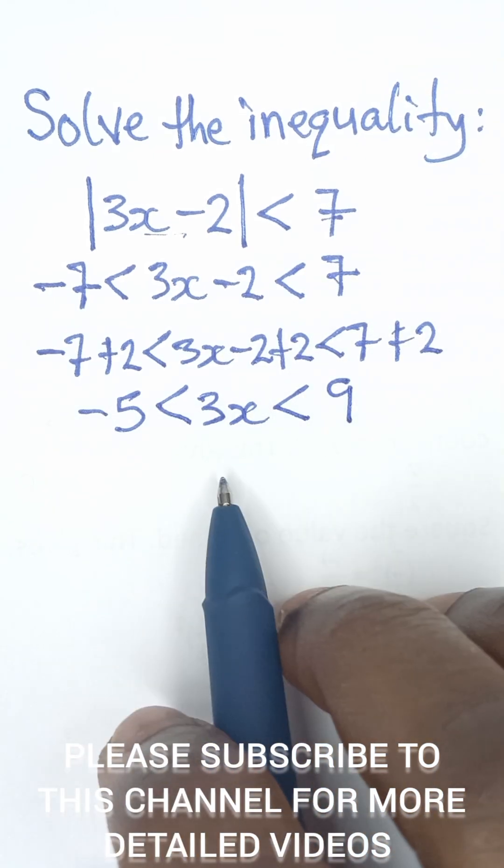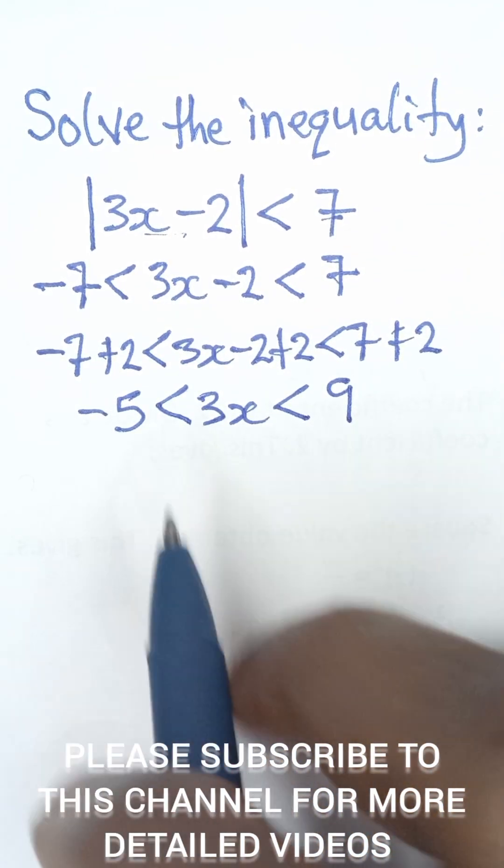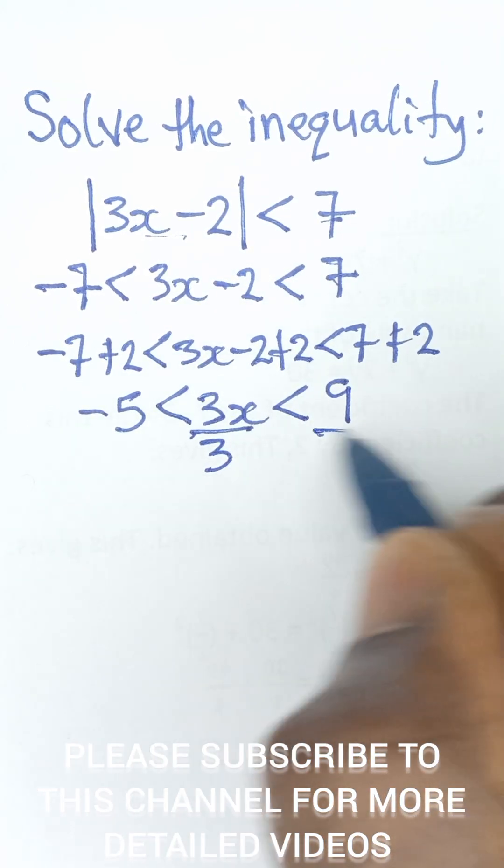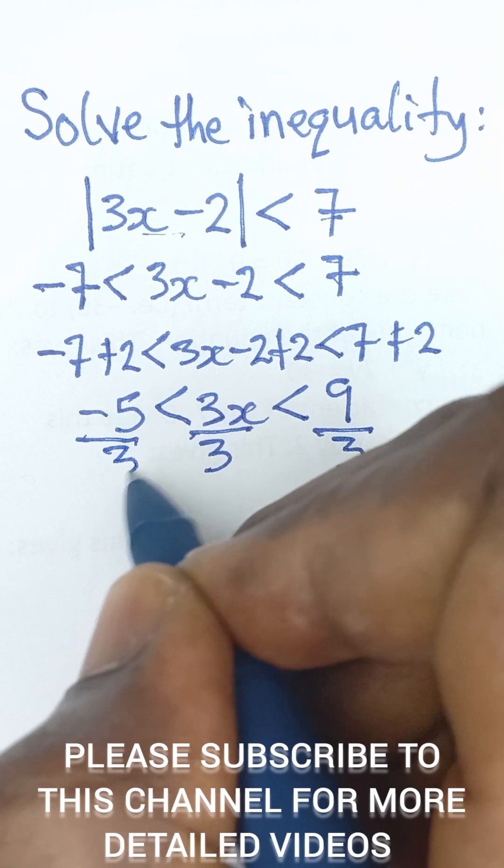So the next thing for us to do is to divide each side of the inequality by 3. So we divide this by 3 so that we are left with x on this side. We divide by 3, and then we also divide by 3.